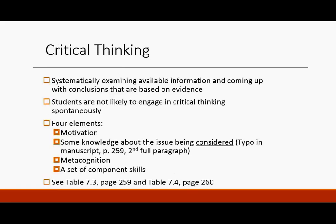In critical thought, we systematically examine available information and come up with conclusions that are based on evidence — systematically examine the information available and then conclude based on evidence, so we kind of research and then conclude. Students are not likely to engage in critical thought on their own spontaneously. There are four elements: they need to be motivated, they need to have some knowledge about the issue to get started, they need to have metacognitive abilities, and some basic skills.